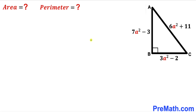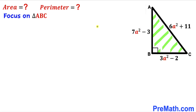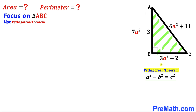Let's get started. Before we can calculate the area and the perimeter of this right triangle, we must find the value of a². So let's focus on right triangle ABC and apply the Pythagorean theorem: a² + b² = c². In our case the hypotenuse is 6a² + 11, whereas the two other legs are 3a² − 2 and 7a² − 3.